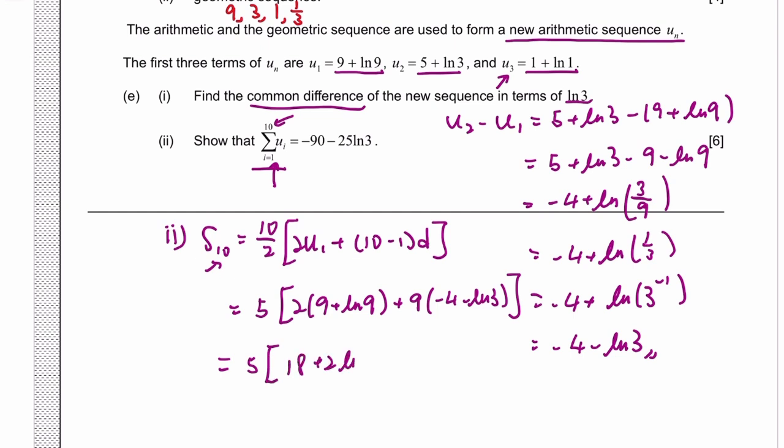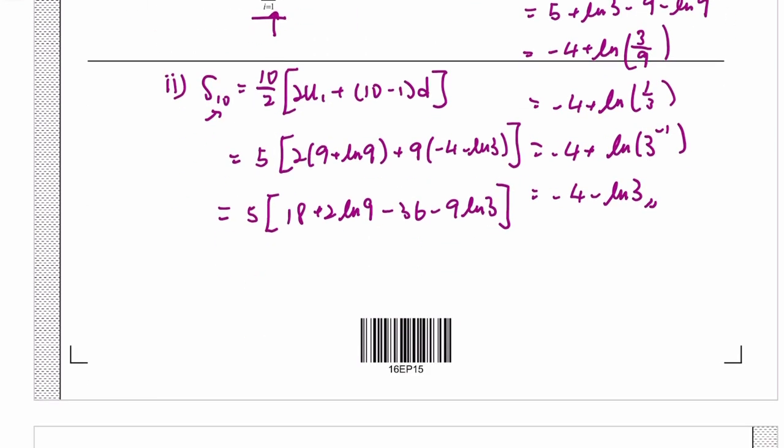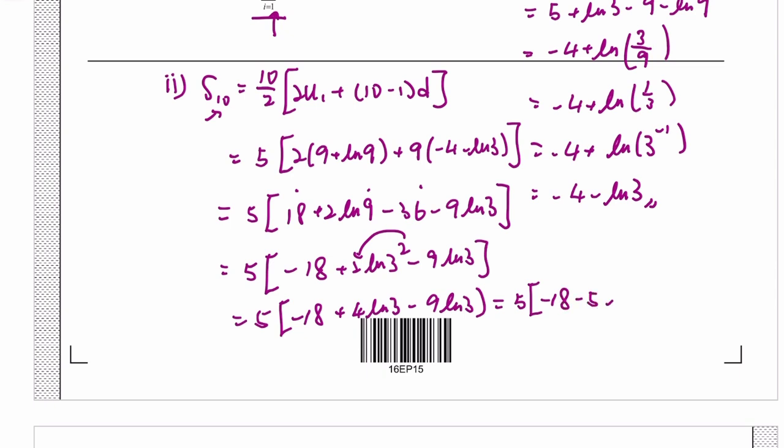I guess we will simplify the inside first. So 18 plus 2 ln 9 minus 36 minus 9 ln 3. So we've got 18 minus 36, so that's minus 18. 9 is 3 squared. So if we drop the power, it becomes 2 times 2, so it's 4. 4 minus 9 is negative 5. Then you multiply 5 in. 5 times 18 is 90, 5 times 5 ln 3 is 25 ln 3, which is what they have.